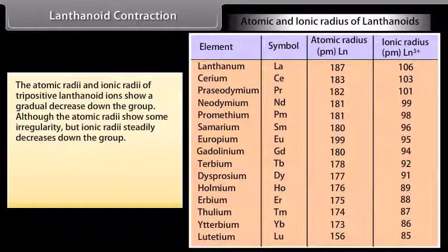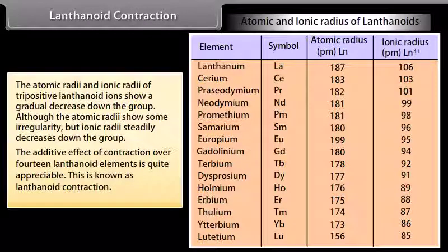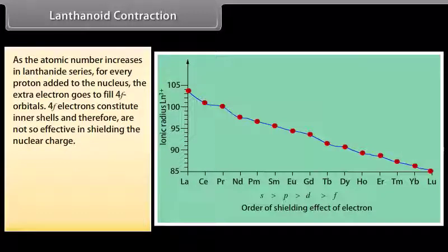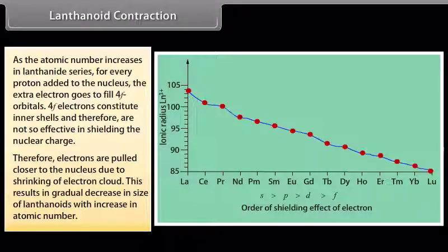The atomic radii and ionic radii of tri-positive lanthanoid ions show a gradual decrease down the group. Although atomic radii show some irregularity, ionic radii steadily decrease down the group. The cumulative effect of contraction over 14 lanthanoid elements is quite appreciable, and this is known as lanthanoid contraction. As atomic number increases, for every proton added to the nucleus the extra electron goes to fill 4F orbitals. Since 4F electrons constitute inner shells and are not effective in shielding nuclear charge, electrons are pulled closer to the nucleus, resulting in gradual decrease in size.